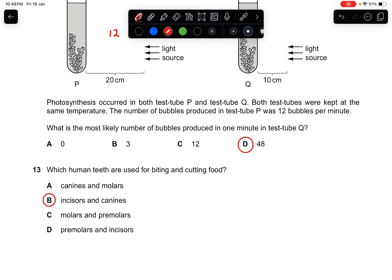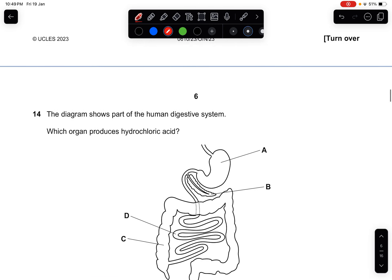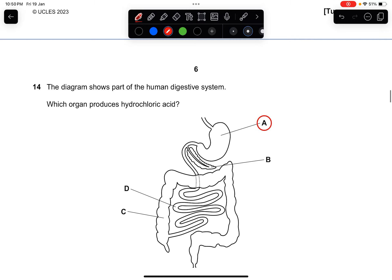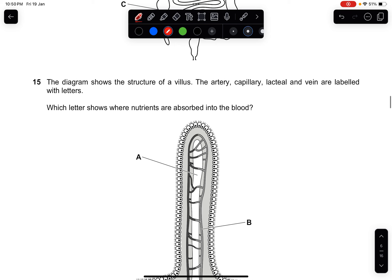Question fourteen: the diagram shows part of the human digestive system. Which organ produces hydrochloric acid? This should be very simple — the answer is A, which is the stomach.